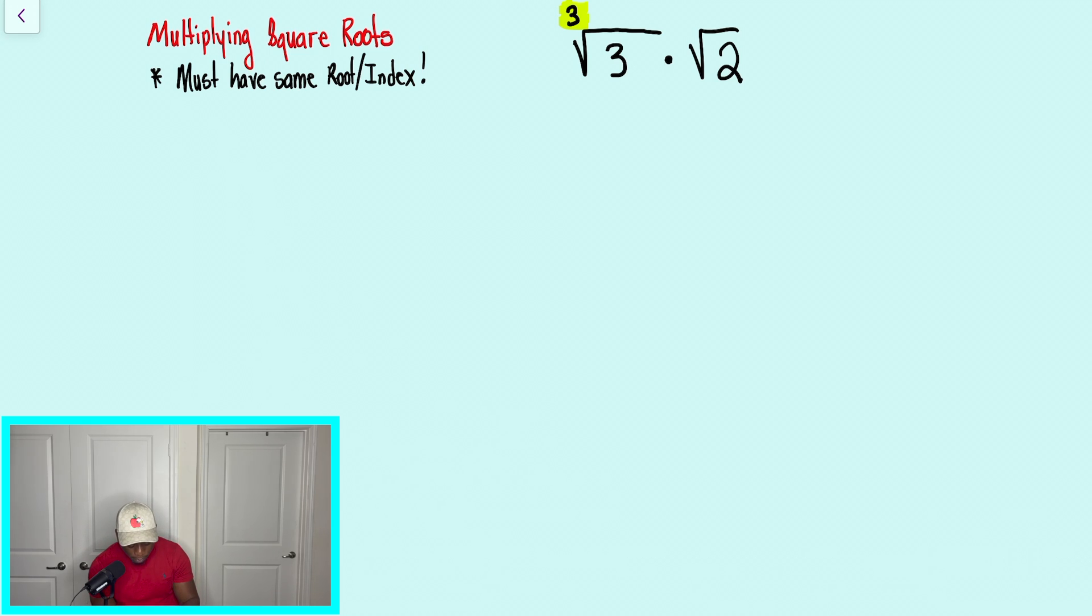But if we had a different problem where they said, hey, we want you all to multiply the square root of 8 times 3 radical 2. This is what we're going to do. So there's no coefficient, there's no number in front of 8. We're going to treat it similar to a variable and assume that it's just 1 on the outside. So we're going to multiply 1 times 3 to get 3.